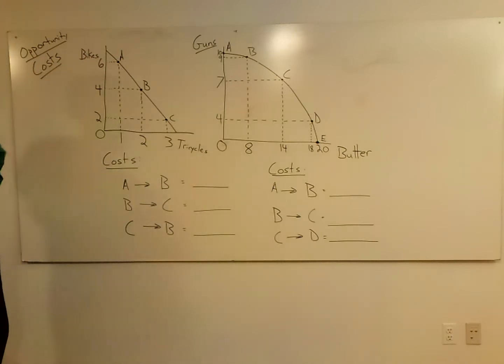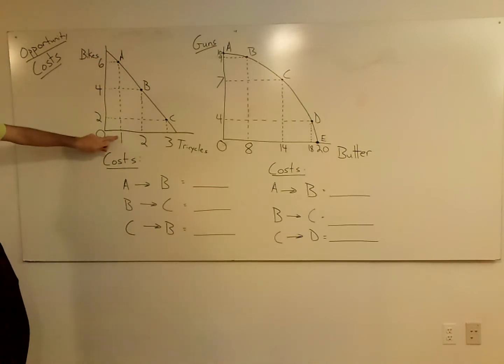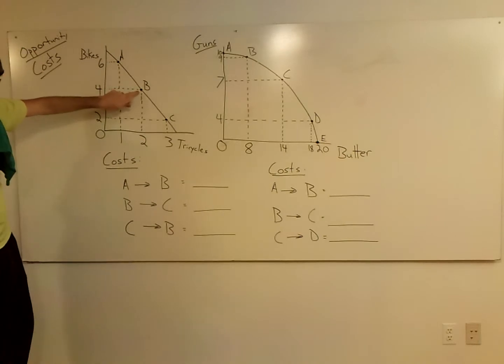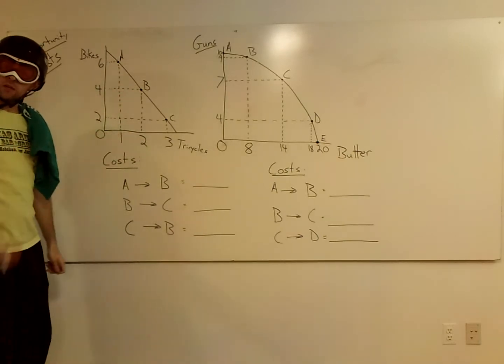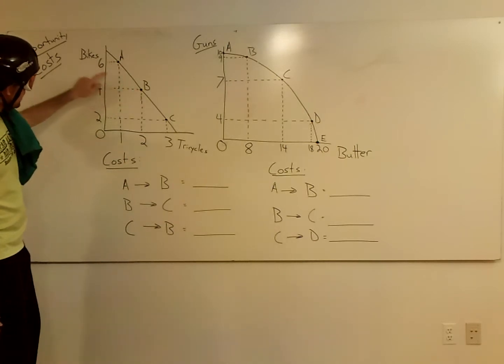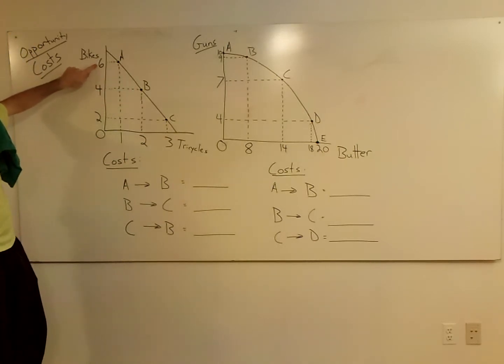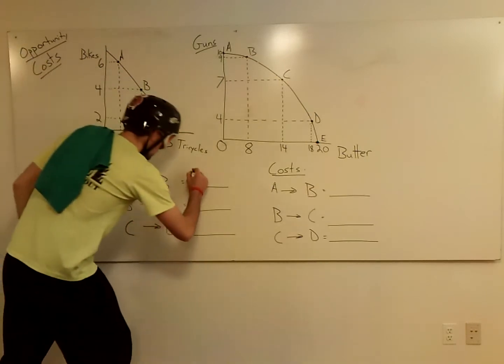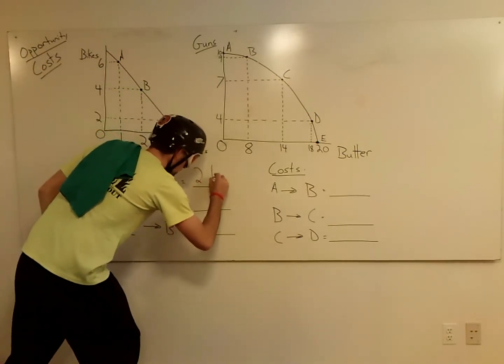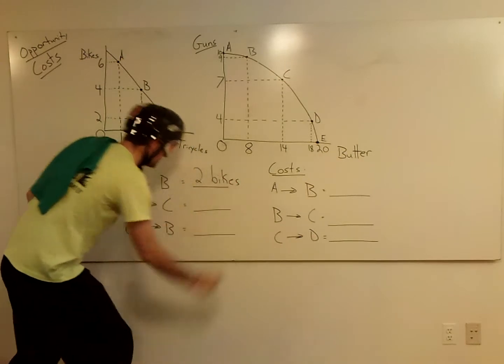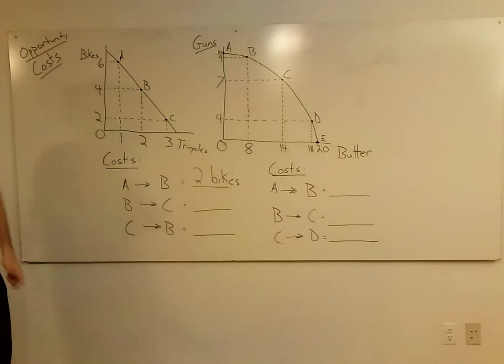Let's do the first one together. So if we go from A where we're making one tricycle to B where we're making two tricycles, question is what do we have to give up to do that? Well we went down here, we went from making six bikes originally to now we make four bikes.